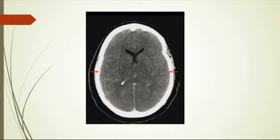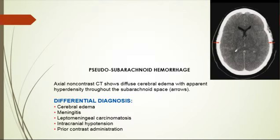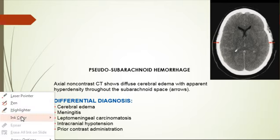What do you think is going on? There is involvement of cortical cells — cerebral edema — with apparent hyperdensity throughout the subarachnoid space. This is called pseudo-subarachnoid hemorrhage. It's not subarachnoid, it's pseudo-subarachnoid, because there is diffuse edema everywhere resulting in relatively increased density of the cortex. The differential diagnosis includes cerebral edema, meningitis, leptomeningeal carcinomatosis, intracranial hypotension, and prior contrast administration.